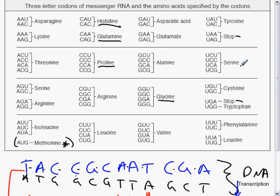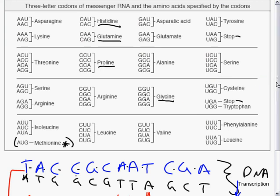Another interesting thing about this code is that it works for all organisms. If we take a human gene for insulin and put it into a bacterium, the bacterium's ribosomes will read it and make the correct protein. The code doesn't have to be the same in every organism, but given that all organisms share the same code, it is a very strong argument in favor of our shared evolutionary heritage.